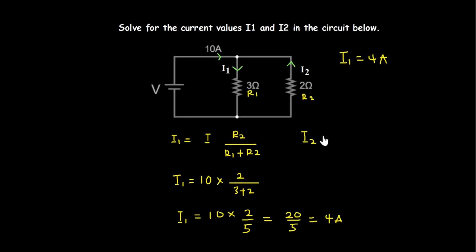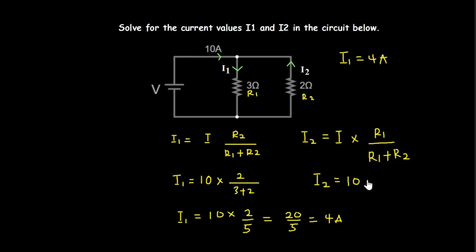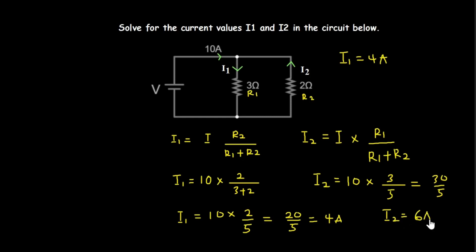To calculate i2, we use: i2 equals i times R1 divided by R1 plus R2. Substituting, i2 equals 10 times 3 divided by 3 plus 2, which equals 30 over 5, giving a value of 6 amperes.